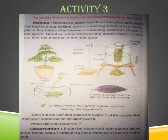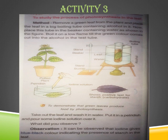Pour some iodine solution over the leaf in the petri dish. What do we observe? It can be observed that iodine gives a blue-black color, indicating the presence of starch in the leaf. The purpose of iodine solution is that it converts starch into a blue-black color, which indicates that starch is present.